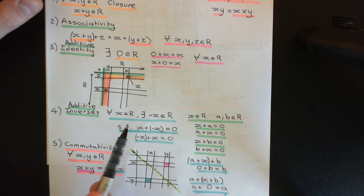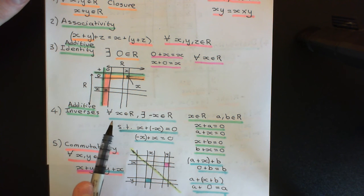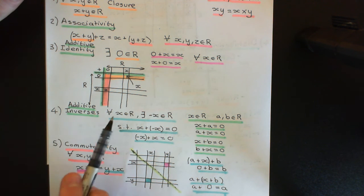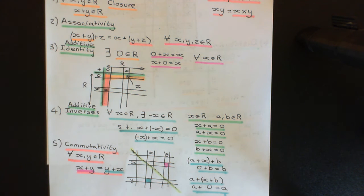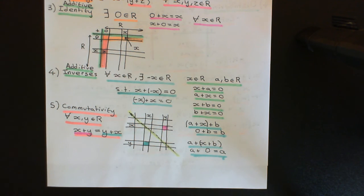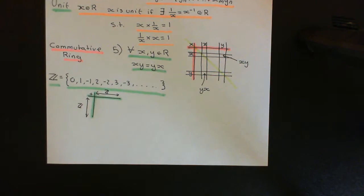All elements in the integers do have a negative integer which they can add to in order to give the additive identity back again. For the additive identity itself — zero — the inverse of zero is zero itself; zero plus zero gives zero. For all other integers, such as five, you have negative five, and if you add five and negative five together either way around, you get zero. It does obey commutativity: it really does not matter which way around you add two things. Five plus three is the same as three plus five, for whatever two integers you select. So this addition composition table obeys the axioms of an abelian group.